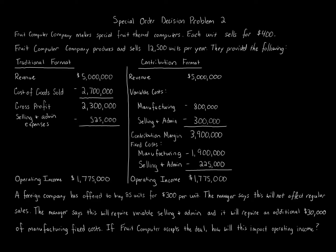A foreign company has offered to buy 85 units for $300 per unit. The manager says this will not affect regular sales. It will require variable selling and administrative costs, and it will require an additional $30,000 of manufacturing fixed costs. The question is: if Fruit Computer accepts the deal, how will this impact operating income?